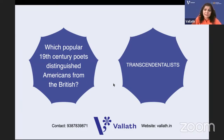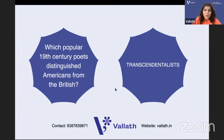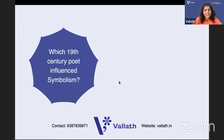Transcendentalism was attacked by some people. Nathaniel Hawthorne and Edgar Allan Poe attacked the Transcendentalists. They are called Dark Romantics.